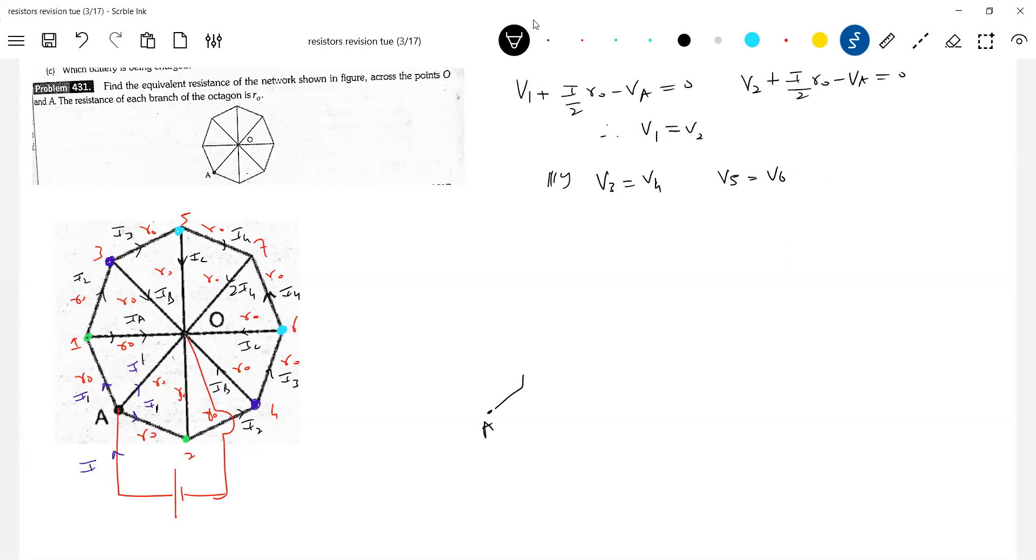This is A. This is O. 1, 2 are at same potential. 1, 2. Then 3, 4. 5, 6. And this is 7. Between 1, 2 there's a resistance. Then between 1, 3. Then from 1, 2. 5, 2, 5, 2, O and 6, 2. Then 7, 2, O. R naught, R naught. This everything is R naught.